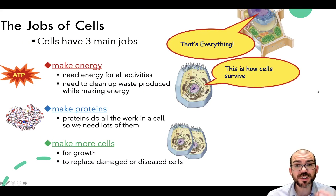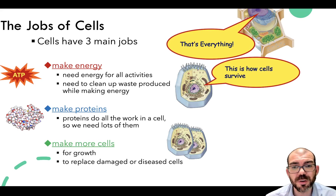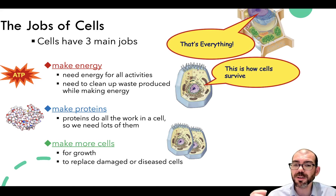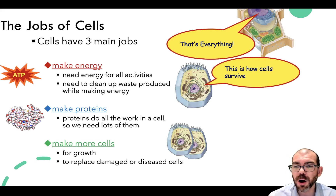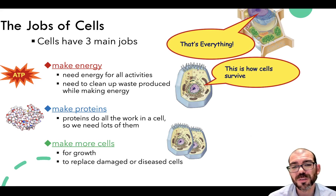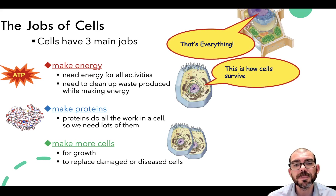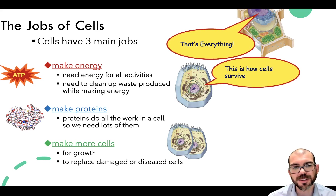So this covers the three jobs of cells. We reviewed how they make energy using the nucleus, mitochondria, lysosomes, and vacuoles; how they're able to make proteins using ribosomes, the endoplasmic reticulum, and the Golgi; and how centrioles are involved in making more cells. I hope this introduction was helpful in understanding the structure and function of all cells and how they interdependently work together to meet the criteria of a living thing. See you next time.